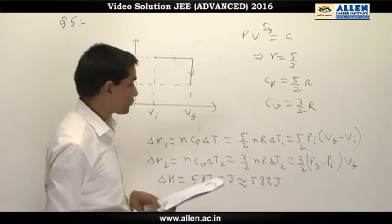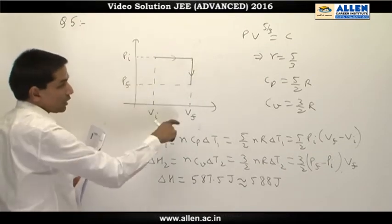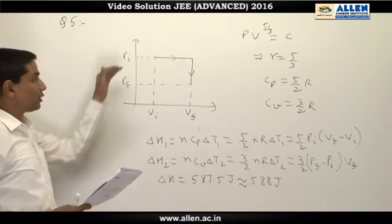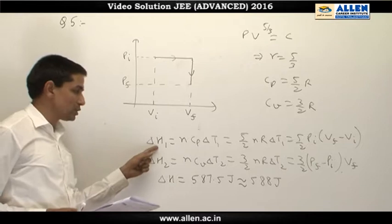The gas undergoes first an isobaric process, as you can see on the PV diagram, and then an isochoric process. We have to find out the total heat given to the gas during this process.